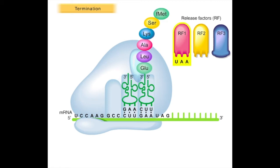RF1 recognizes UAA and UAG, while RF2 recognizes UAA and UGA. RF3 does not recognize any stop codons but stimulates the subsequent termination events.